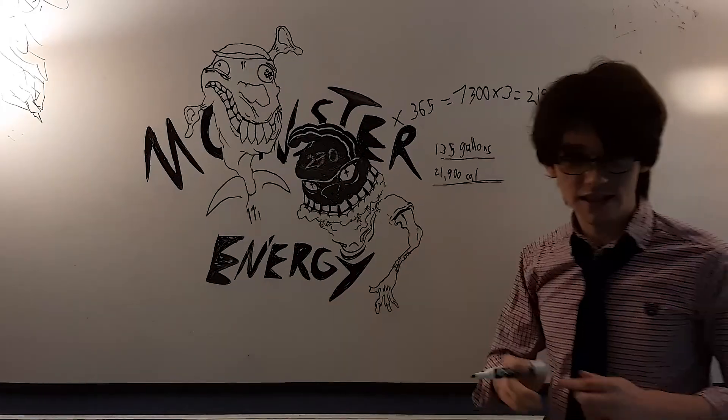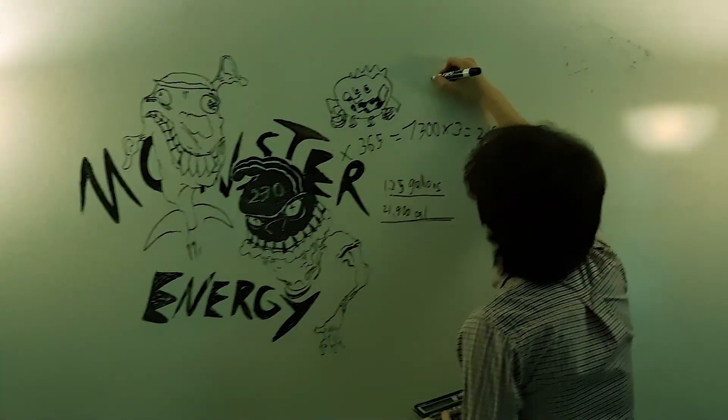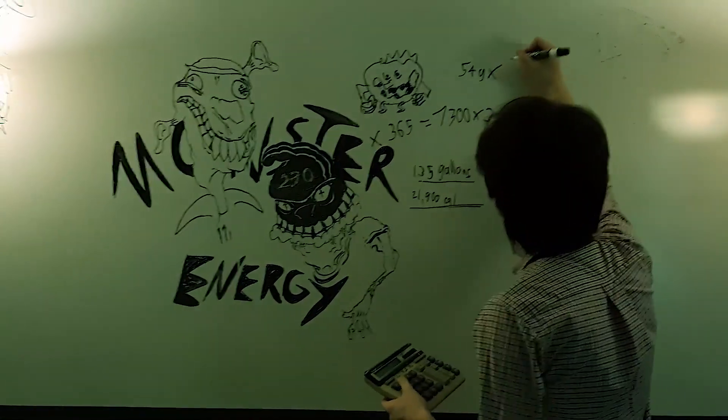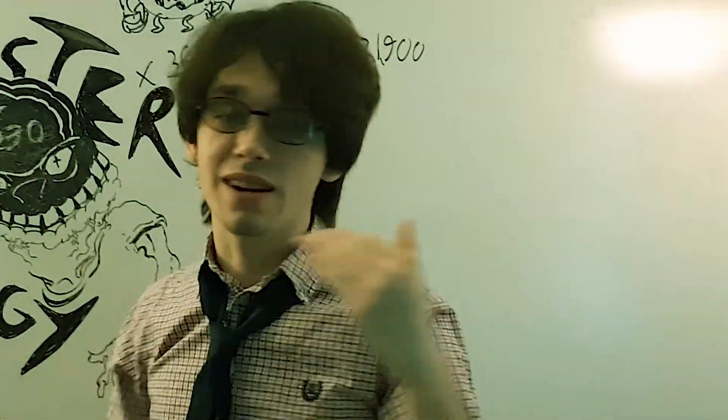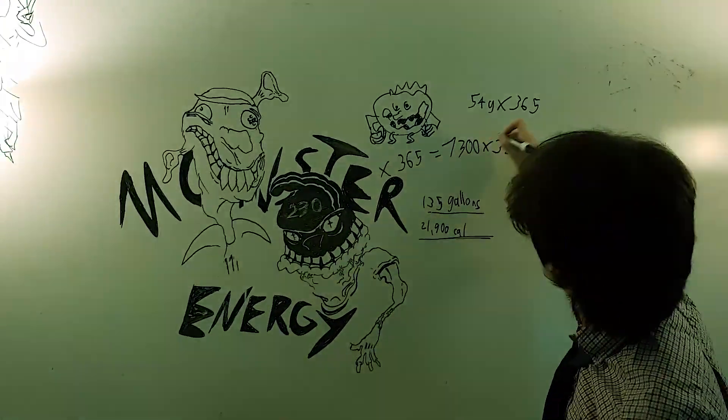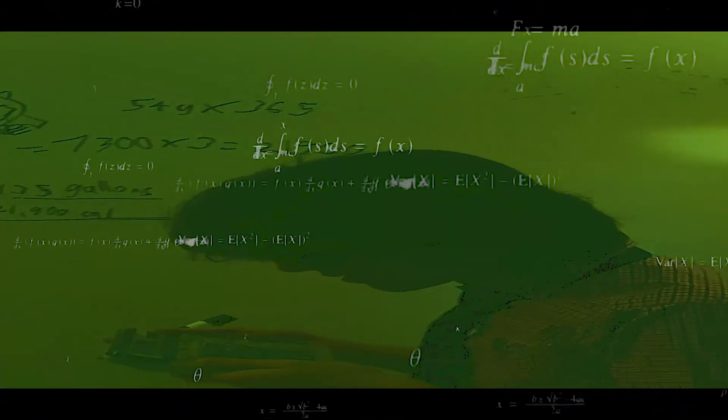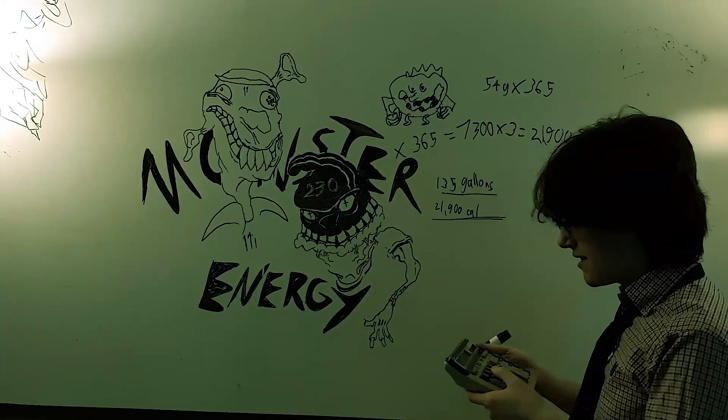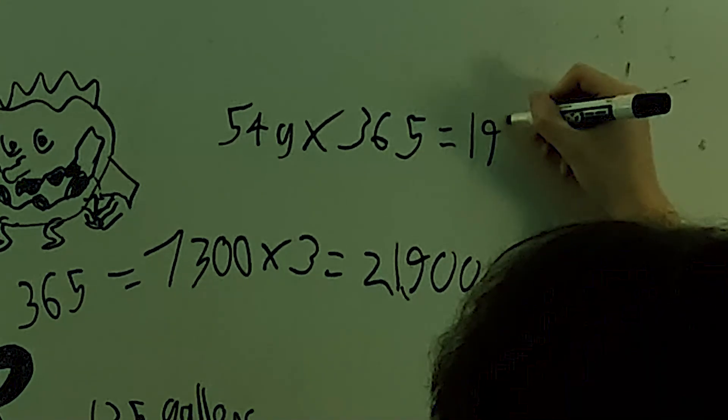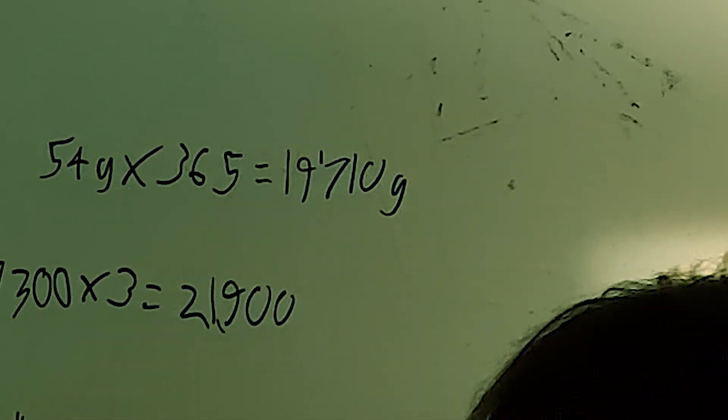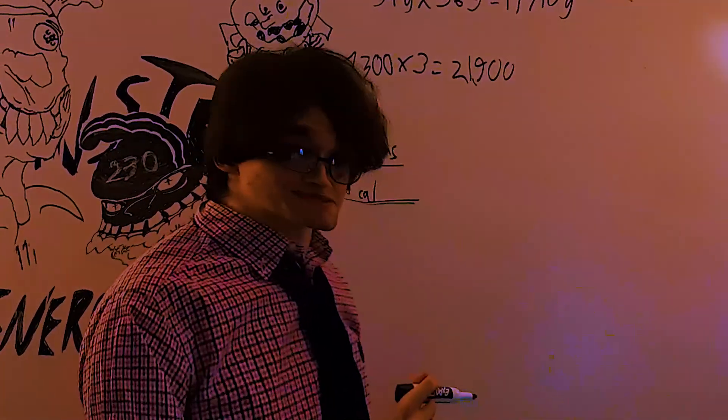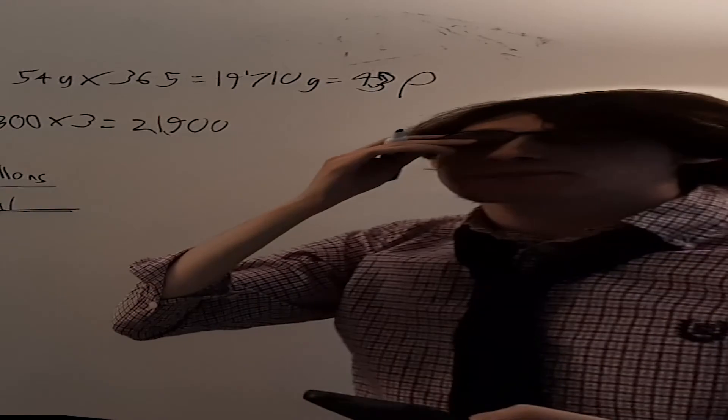Alright, let's get some sugar in here. You guys like sugar? So let's do 54G times 365. Because that's how many monsters I do, roughly. A true monster fan does miss a day once in a while. 54 times 365, that is 19,710 grams here. Now let's add up all the weight. So that is 43 pounds of sugar.